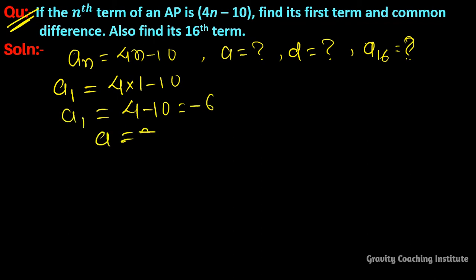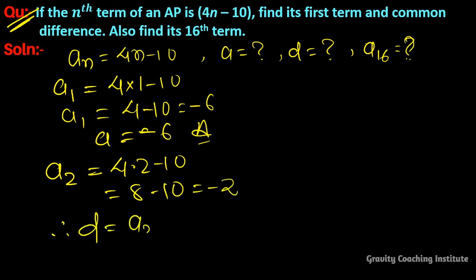And putting n equal to 2, so 4 into 2 minus 10, so 8 minus 10 equal to minus 2. So therefore d equal to a₂ minus a₁ is equal to minus 2 minus 6.